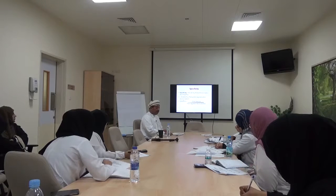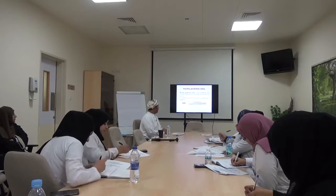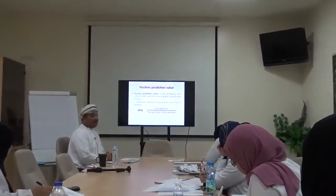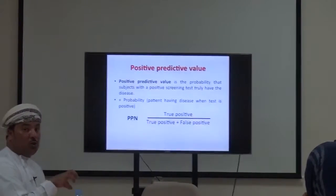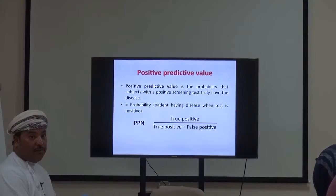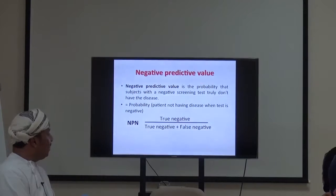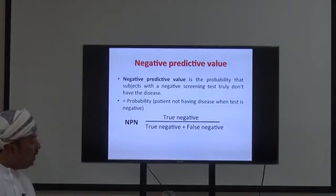Positive predictive value (PPV) is the probability that a subject with a positive screening test truly has the disease. The formula is: true positives over true positives plus false positives. Negative predictive value (NPV) is the probability that a subject with a negative screening test truly does not have the disease. The formula is: true negatives over true negatives plus false negatives.